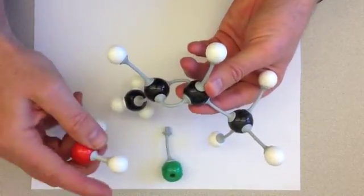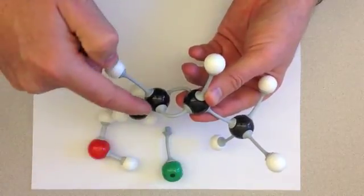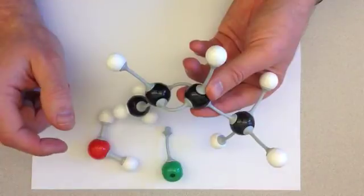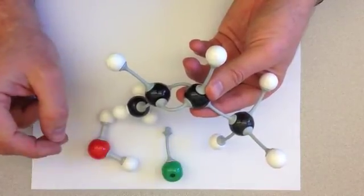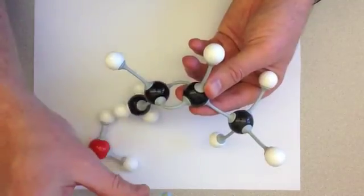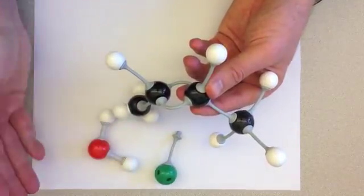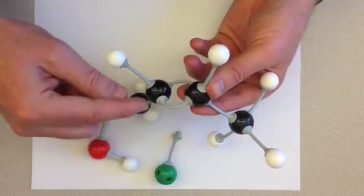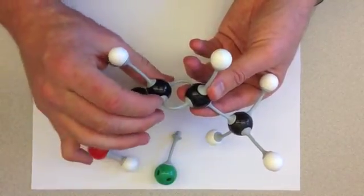The abstraction of this proton and the formation of this double bond occur in a concerted fashion. And so we really only have two steps as part of an E1 mechanism. The first was the leaving group leaving, forming a carbocation intermediate. The second is the concurrent removal of a proton from a beta carbon and the formation of a double bond.